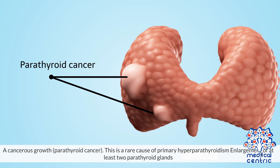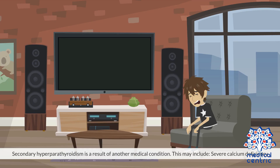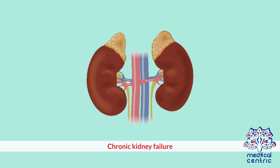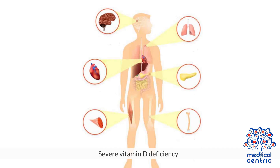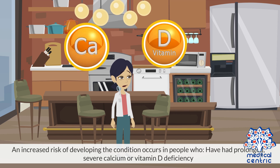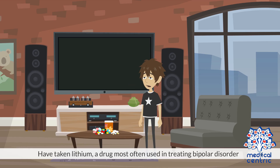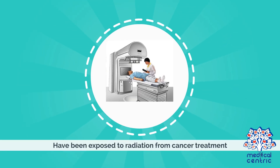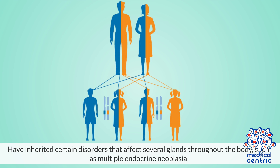A cancerous growth, or parathyroid cancer, is a rare cause of primary hyperparathyroidism. Enlargement of at least two parathyroid glands is another cause. Secondary hyperparathyroidism is a result of another medical condition, and may include severe calcium deficiency, chronic kidney failure, and severe vitamin D deficiency. An increased risk of developing the condition occurs in people who have had prolonged severe calcium or vitamin D deficiency, have taken lithium — a drug most often used in treating bipolar disorder — or have been exposed to radiation from cancer treatment.